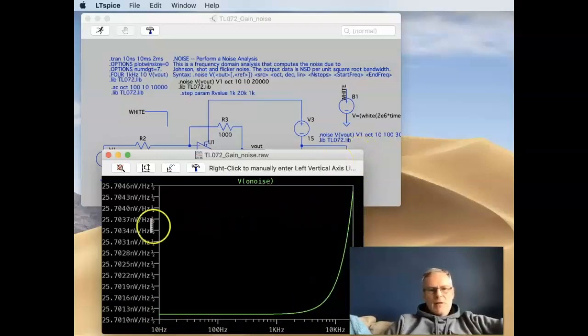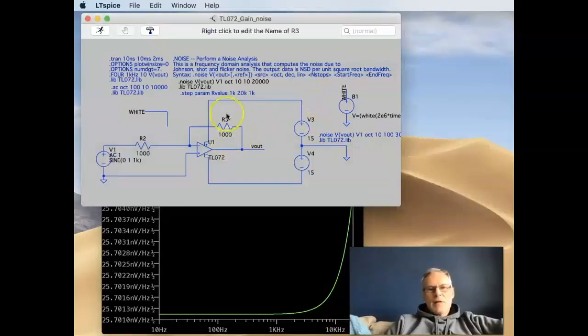But it might seem like it rises rapidly, but if you look at the values here, there's not a great deal of difference. It just looks like there is, but there's certainly a change in noise as you get up to the 20K region. So in exactly the same way we did before, maybe we want to change the gain of this amplifier.